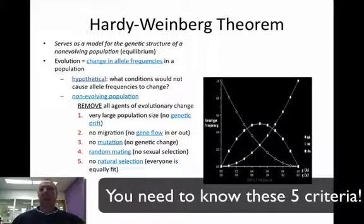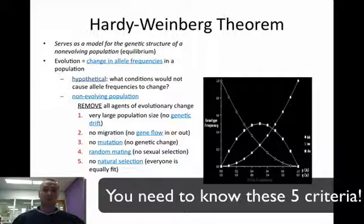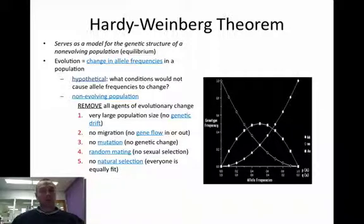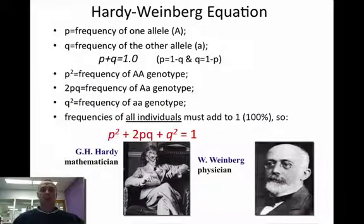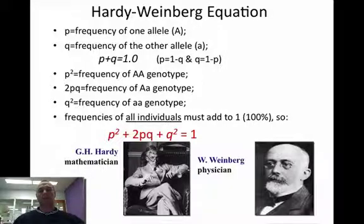It has to have a very large population size so there's no genetic drift occurring. There can be no migration, so there's no gene flow. There can be no mutations. There has to be random mating occurring, and there can be no natural selection in order for this to actually work. The Hardy-Weinberg principle was developed by Hardy and Weinberg, who were mathematicians and a physician.